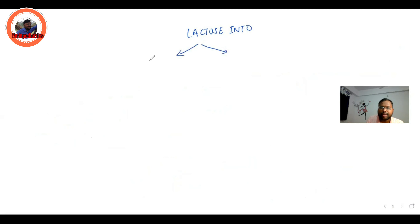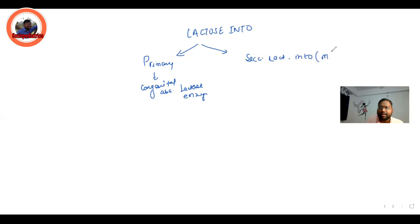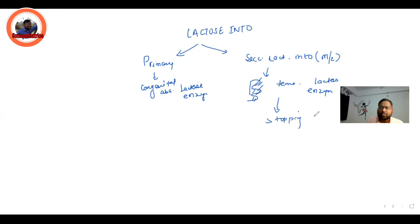Next, let's discuss lactose intolerance, which is of two types. The first is primary: there is congenital absence of the lactase enzyme. The second is secondary lactose intolerance, which is more common. In the intestine there are microvilli, and destruction of these microvilli leads to a temporary loss of the lactase enzyme. After stopping the source of lactose, the microvilli regenerate and the condition subsides.